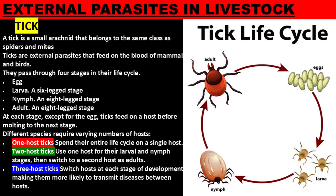Ticks pass through four stages in their life cycle: egg, larva, nymph, and adult. At each stage, except for the egg, ticks feed on a host before molting to the next stage.